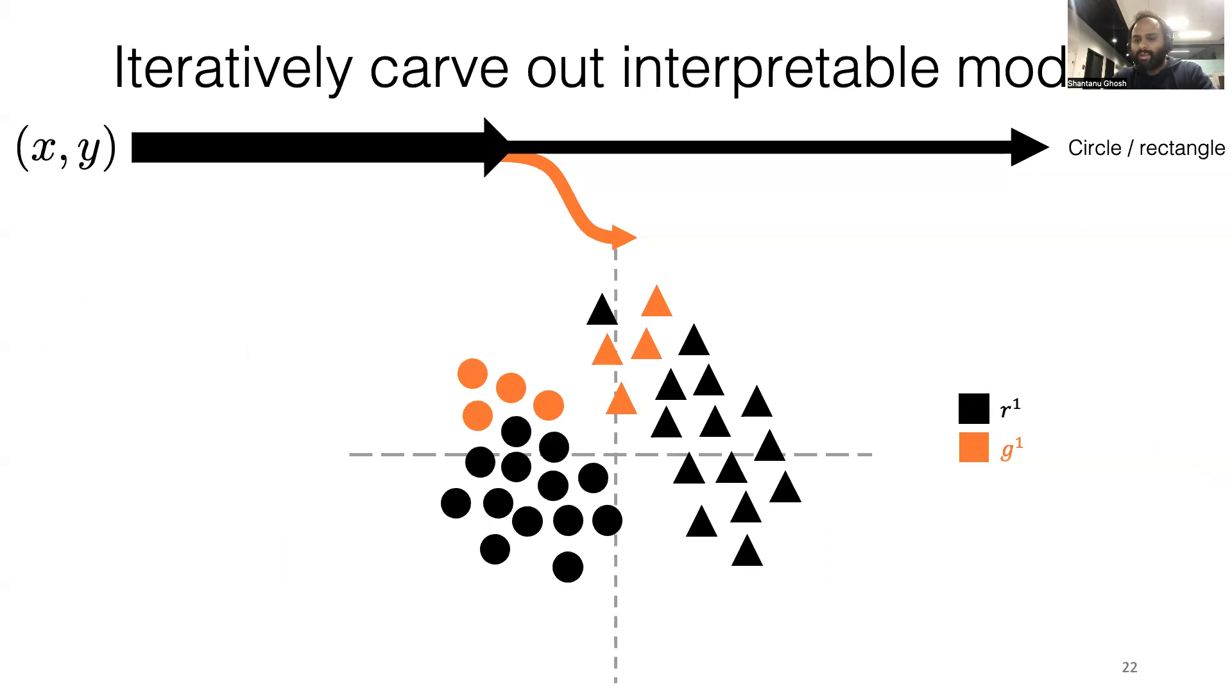There will be a part of the black box that the interpretable model does not approximate well. We term it as the residual shown by R1 in the picture. With this R1, we're going to cover the remaining black samples.